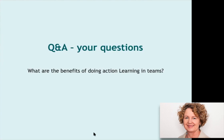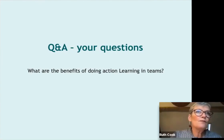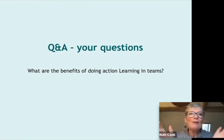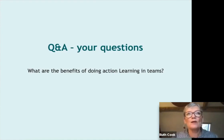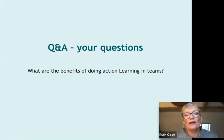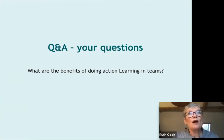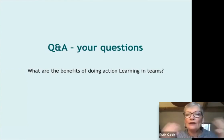Miles asks about using action learning with matrix working and those kinds of structures. The person working within a matrix structure — maybe working to two or three different people who don't standardly get together — can often be in a very difficult position with competing priorities and people not understanding the demands made on them from different directions. Action learning might be a structure to bring people together in that situation, have them listen to each other and negotiate, with the presenter most obviously being the person who's the cornerstone of the matrix. It could also be a way for people in a matrix structure to explore what is functioning and what isn't.